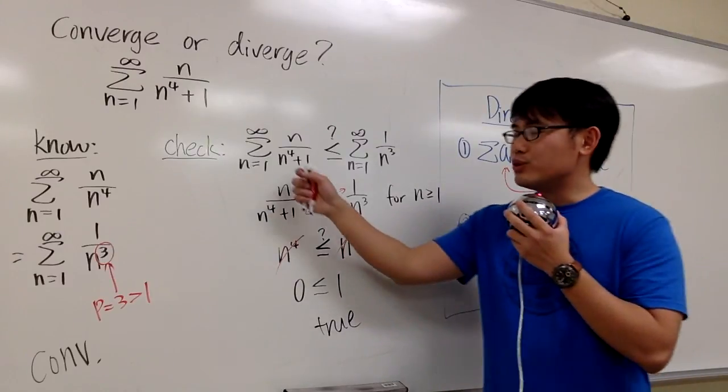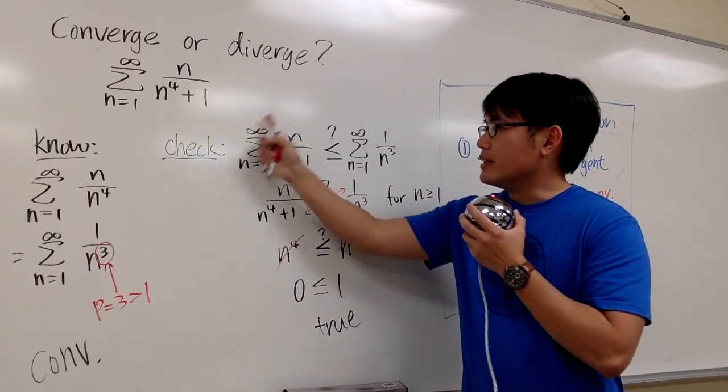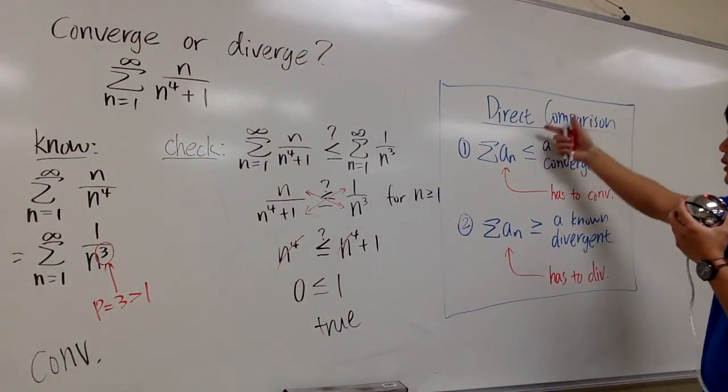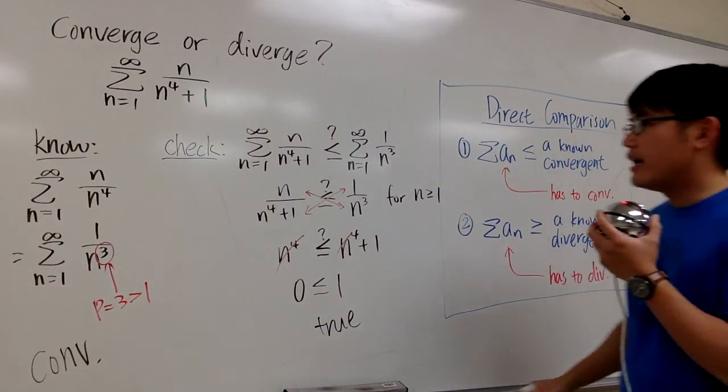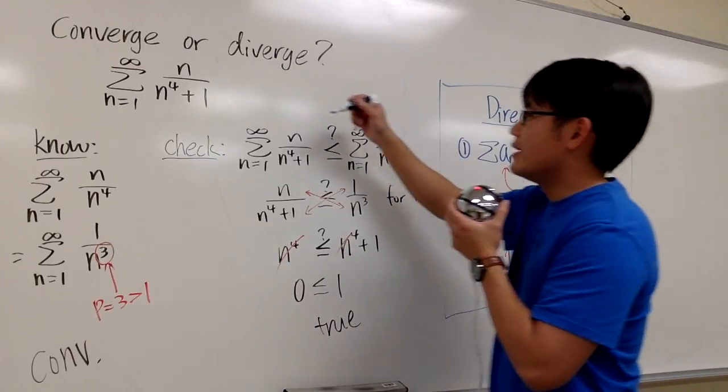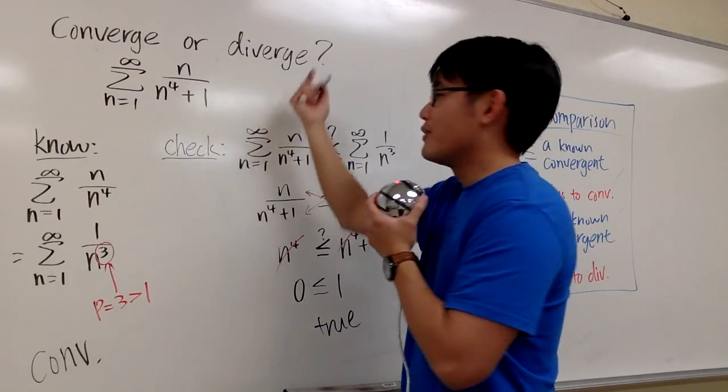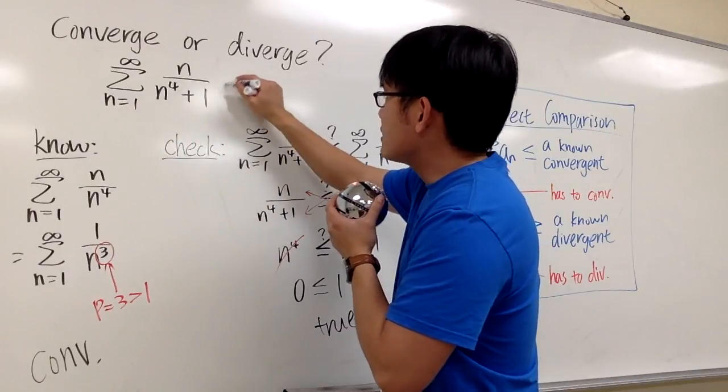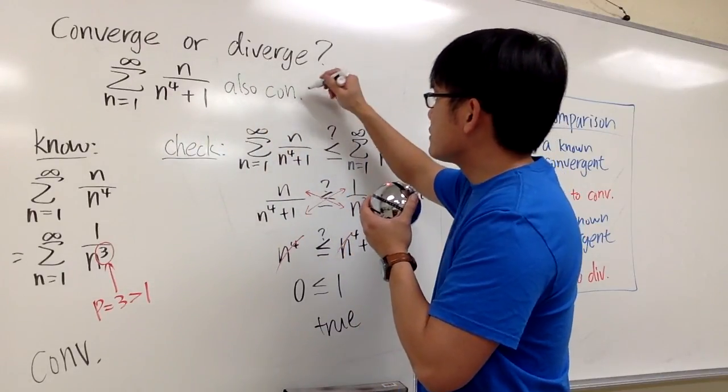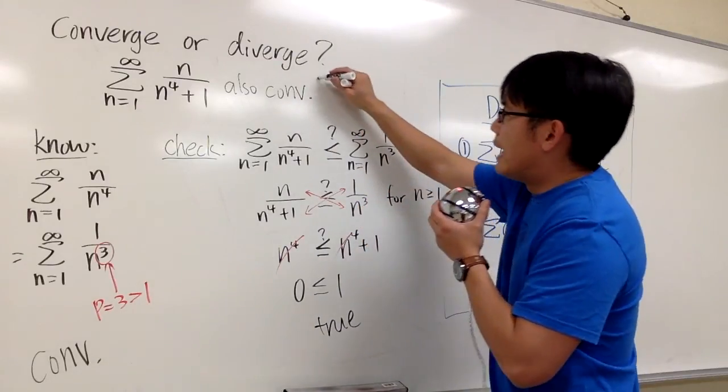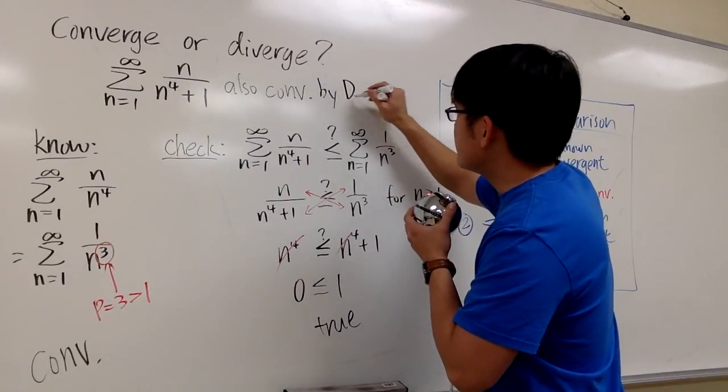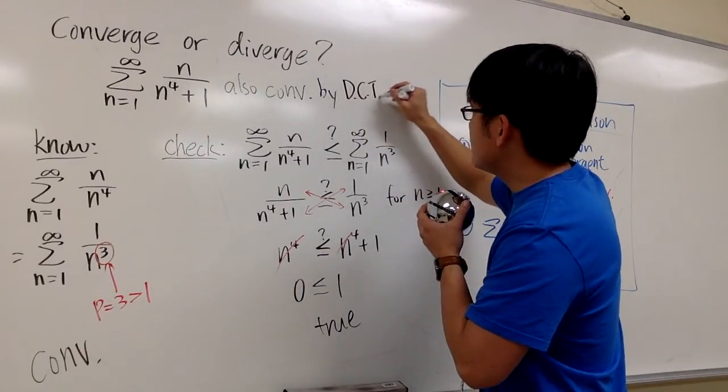The good thing is that we get to draw a conclusion then. We can say this also converges by the direct comparison test. I'll just write it down here. This also converges by direct comparison test, so I'll abbreviate that by DCT.